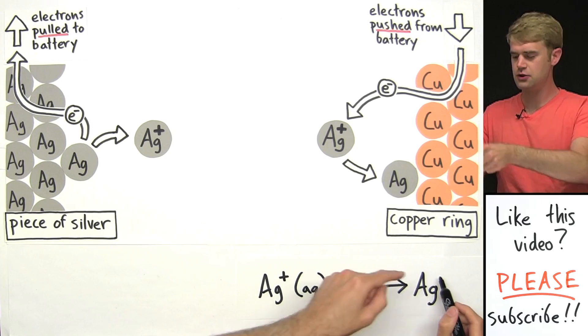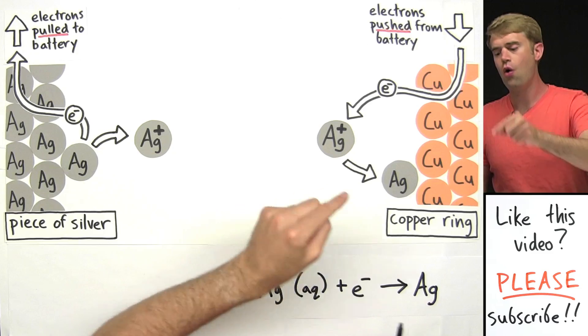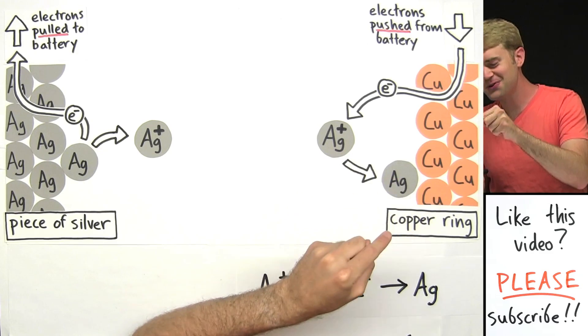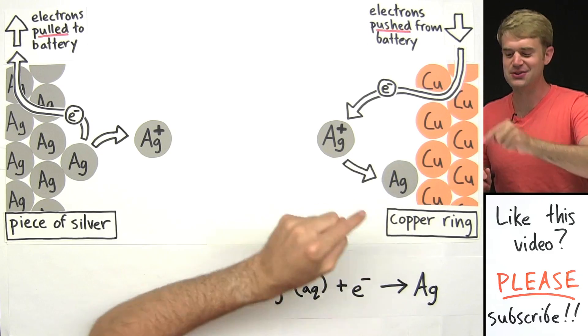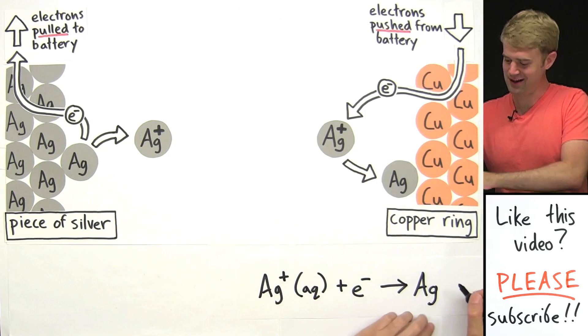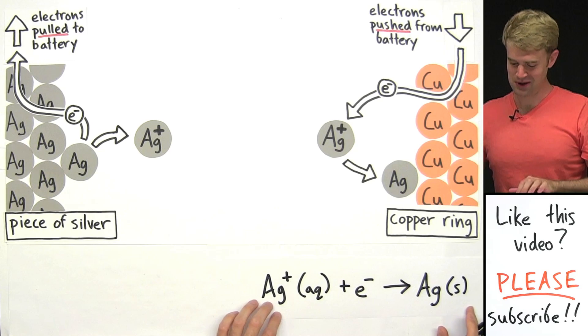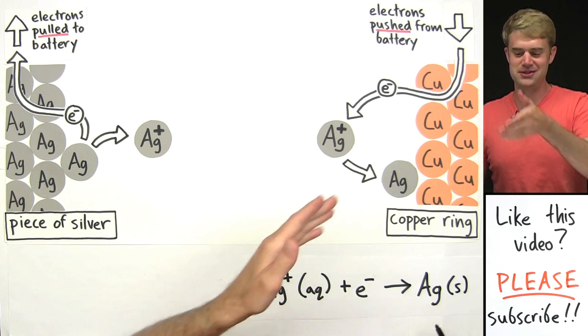Ag, we know it's neutral because there's no charge up here. If there's no charge, it just means it's neutral. What is the physical state of this atom? It's solid, solid metal sticking to the surface of the copper ring, so I will indicate that with an S in parentheses. So this is the equation for what's happening here.